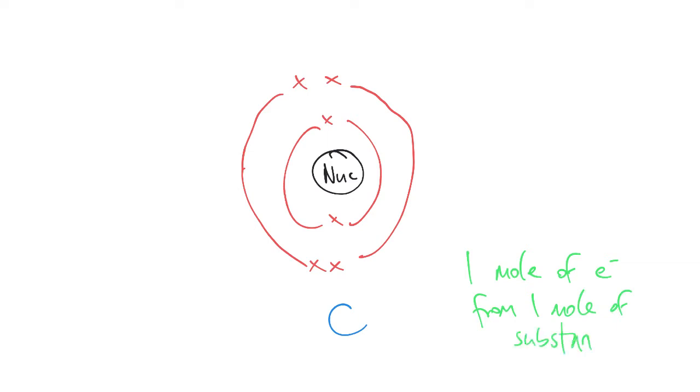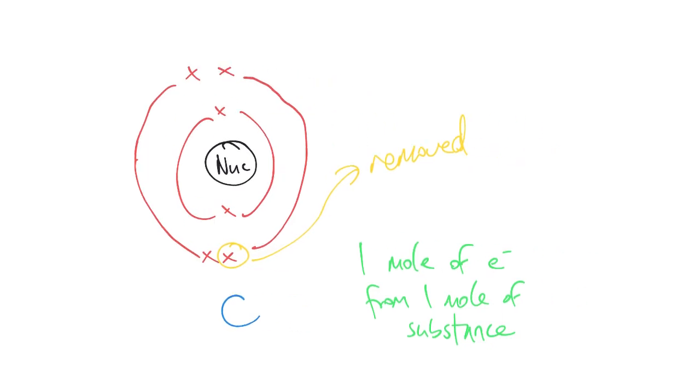Remember, successive ionization energy is the amount of energy to remove one mole of electrons from one mole of the substance. If you are to remove this electron, it's going to take a certain amount of energy. Now, this becomes only has five electrons now.